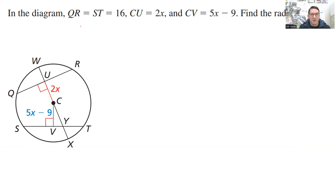So that's kind of an awful diagram, but okay, we'll work with it. In diagram, QR is equal to ST is equal to 16. So let's find QR. QR, so this whole thing here, QR is equal to ST, and these are all 16. So 16, the whole thing is 16. Same thing down here. This whole thing is 16. CU is 2x, CV is 5x minus 9. Find the radius of circle C.